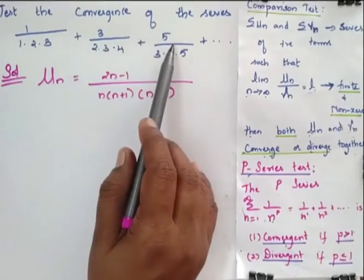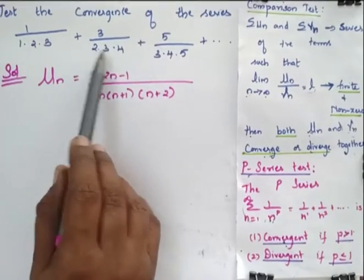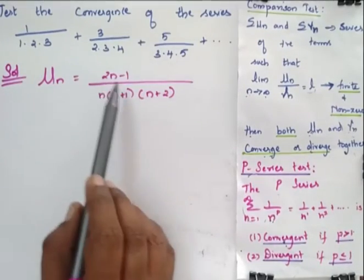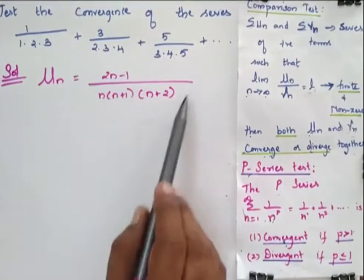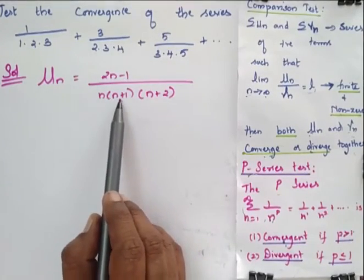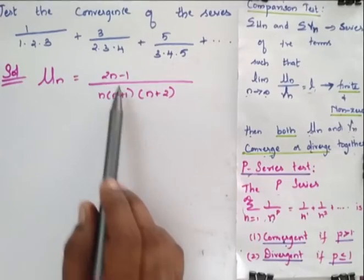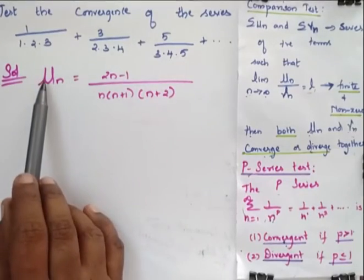1, 3, 5 and here it is 1, 2, 3, 2, 3, 4, 3, 4, 5. So this can be replaced by this general term: 2n minus 1 by n into n plus 1 into n plus 2. So this general term becomes un.